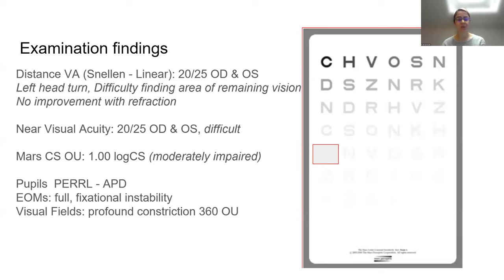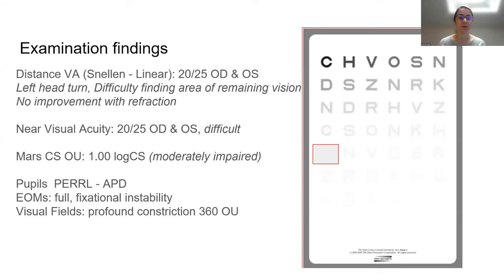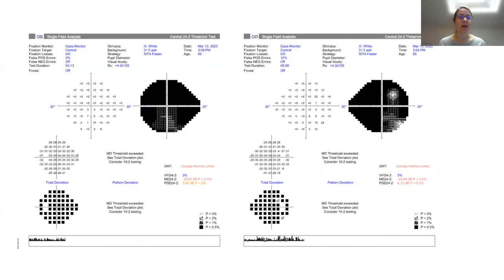Her distance acuities were 20/25 in each eye. She turned her head left when reading and had trouble finding letters on the screen, though she was able to do it with enough time and help. Vision did not improve further with refraction, and she was able to read very small print on near acuity testing, though with great difficulty. Contrast sensitivity was moderately impaired at 1.0 log CS in both eyes together. Her pupils were full and normal, and eye motilities could reach all positions needed, but fixation was very unstable — she would lose sight of the light target throughout testing.